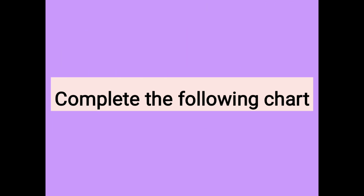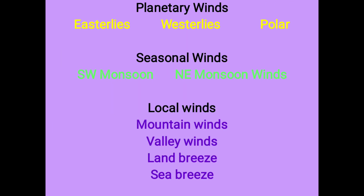Complete the following chart. Planetary winds are divided into three: Easterlies, Westerlies and Polar winds. Seasonal winds are Southwest monsoon winds and Northeast monsoon winds. Local winds are mountain winds, valley winds, land breeze and sea breeze. This chart is given in your textbook, so please write down the answers according to the chart.